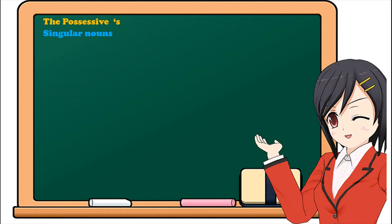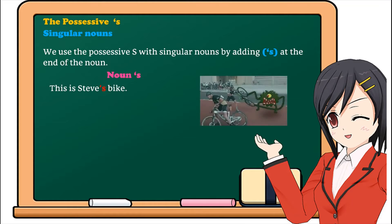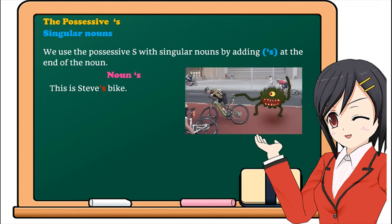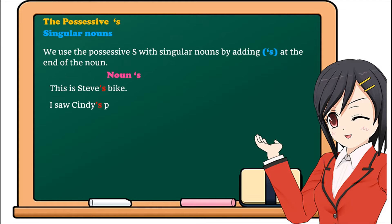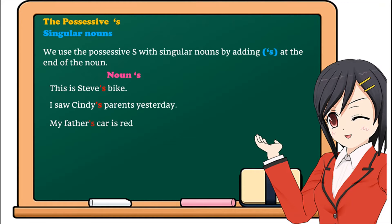So for the possessive S, we have it with plural nouns and with singular nouns. Let's start with singular nouns. We use the possessive S with singular nouns by adding apostrophe S at the end of the noun. For example, this is Steve's bike. I saw Cindy's parents yesterday. My father's car is red.